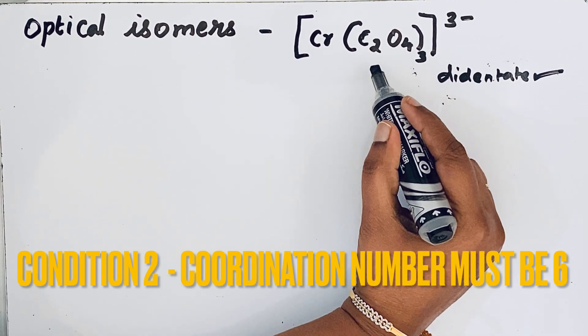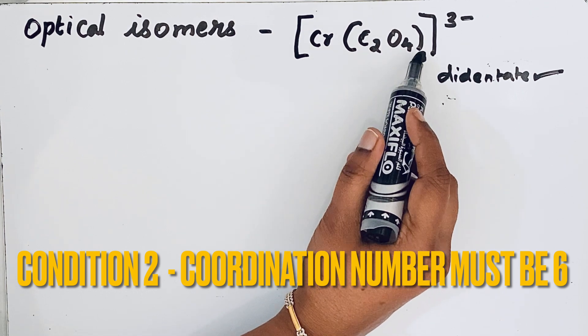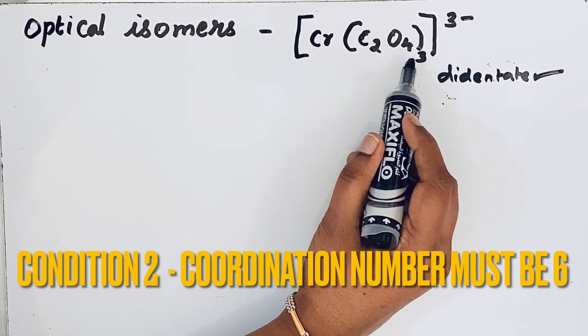Then what is the second condition? The coordination number of the central atom must be 6. Here you can see there are three oxalate ligands.